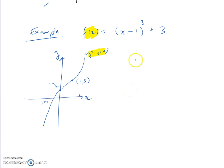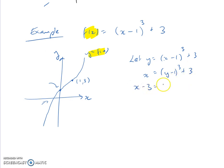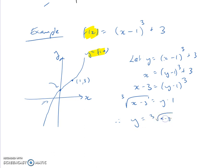We use the idea that the x and y values are swapped around. So what we do is we let y equal our function, then I swap the x and y values — I make y into x and x into y. So we get x equals (y minus 1)³ + 3. Then I need to solve for y: subtract 3 from both sides, and the opposite of cubing is taking the cube root. Therefore, y equals the cube root of (x minus 3) plus 1. And that's my inverse function, labelled as f⁻¹(x).